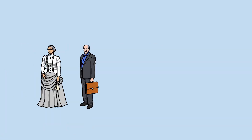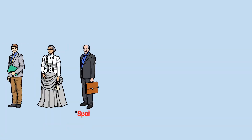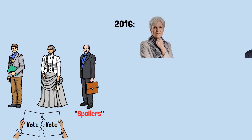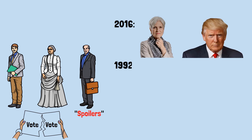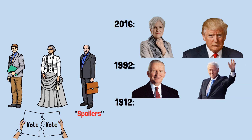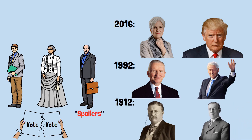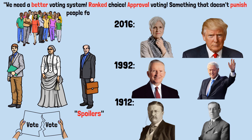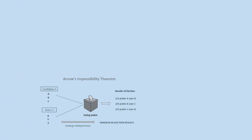You see this in every election with more than two candidates. Third parties are called spoilers because they split votes and change outcomes without winning. In 2016, some Democrats blamed Jill Stein for Trump's win in key states. In 1992, some Republicans blamed Ross Perot for Clinton's win. In 1912, Theodore Roosevelt's third-party run split the Republican vote and gave the election to Democrat Woodrow Wilson. Every time this happens, people say we need a better voting system — ranked choice, approval voting, something that doesn't punish people for voting for who they actually want. And that's where Arrow's theorem comes in to deliver the bad news: there is no better system. Every system is broken in some way.